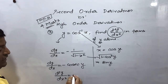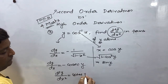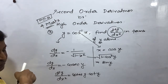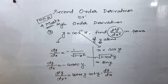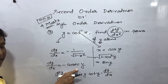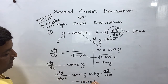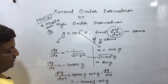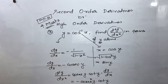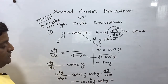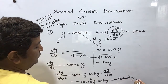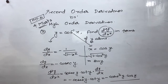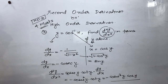So from here I will write: differentiating dy/dx = −cosec y again with respect to x — d²y/dx² = −cosec y · (−cot y) · dy/dx. Substituting dy/dx = −cosec y: = −cosec y · (−cot y) · (−cosec y) = −cosec²y · cot y. If we expand cot y = cos y/sin y and cosec y = 1/sin y, the answer can also be written as −cos y/sin³y. So d²y/dx² = −cosec²y · cot y.